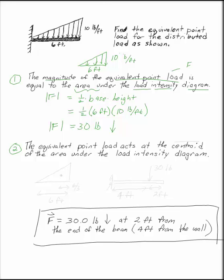Where does it act? It acts at the centroid of the area under the load intensity diagram. The centroid of a triangle is a third of the way from the big end. So on my triangle, which is six feet long, the centroid is a third of the way over. Six over three is two, two feet from the end of the beam.